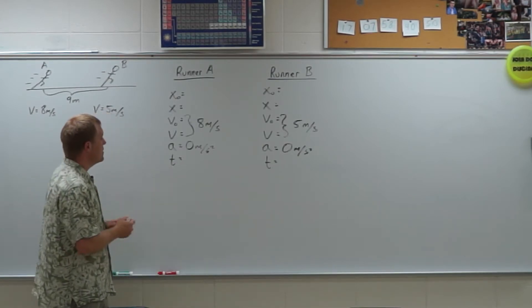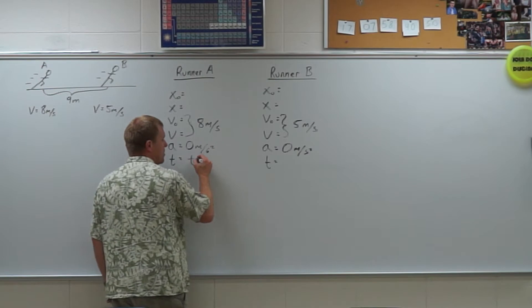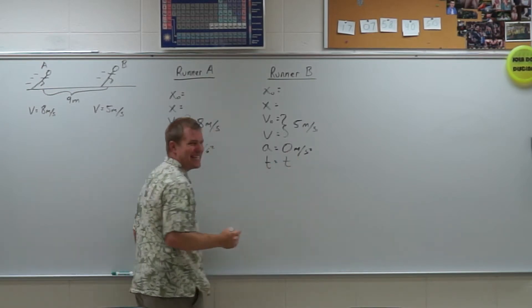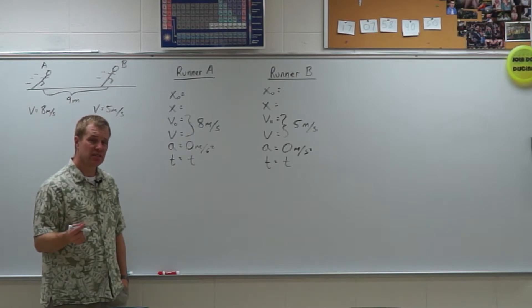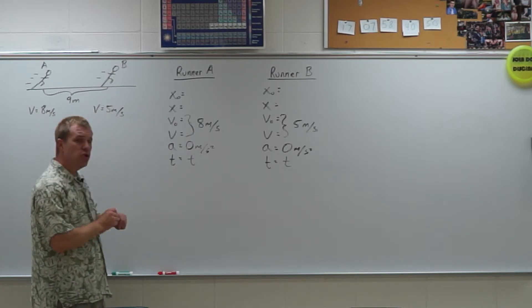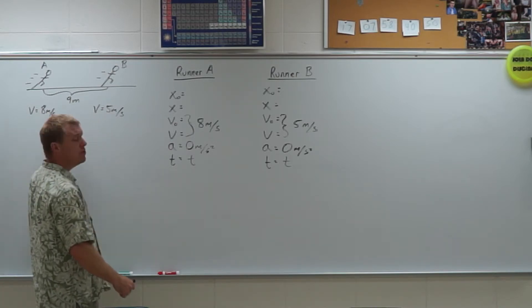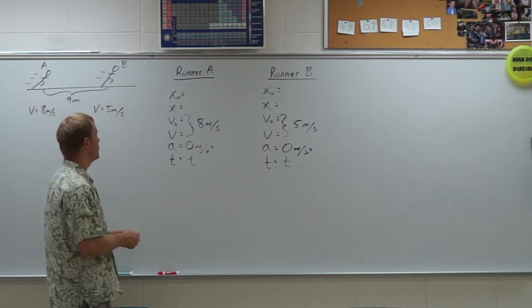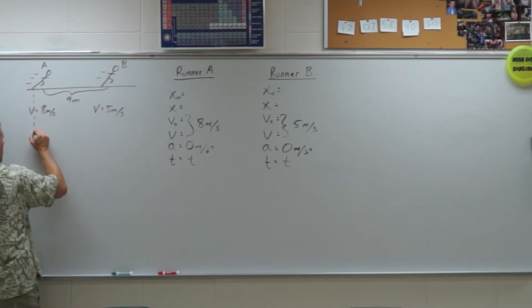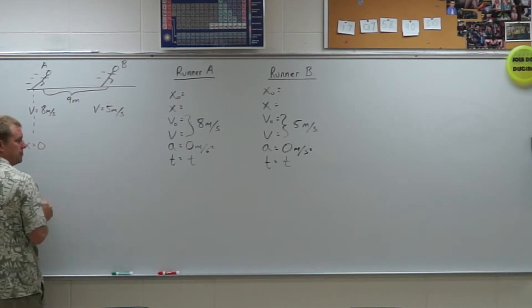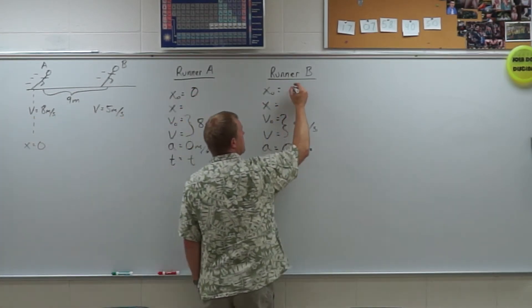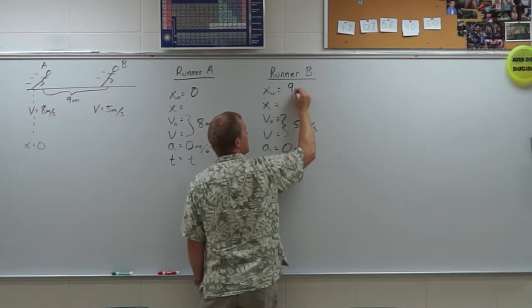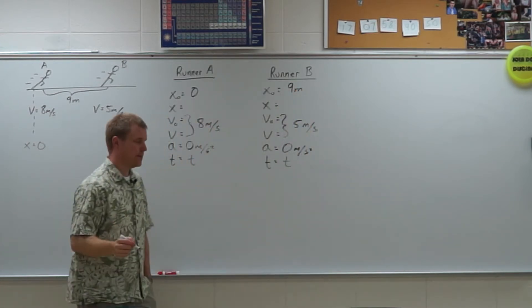Now remember, they need to be on the same coordinate system and in the same time frame. So since they both start at the same time, they're both going to experience a time t. But they don't start at the same position. So I've got to choose which one should start at position zero. Well, I'm going to just choose the first runner as x equals zero. So runner A starts at zero, runner B starts at 9 meters then. Now they're on the same coordinate system.